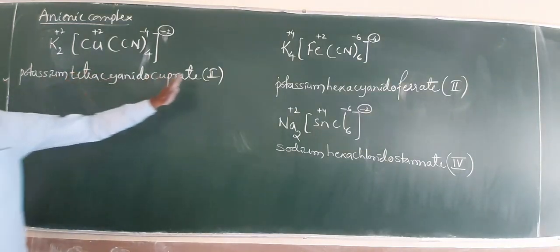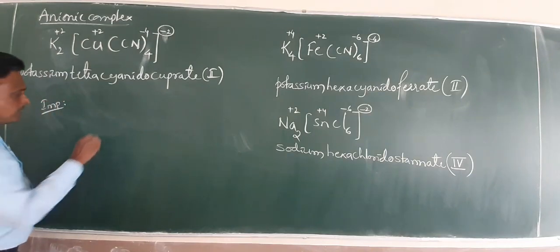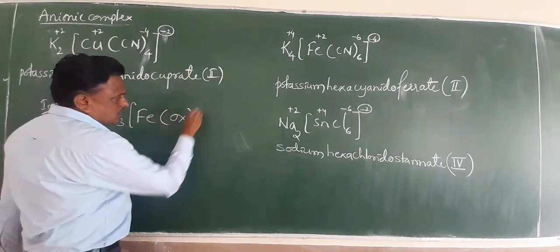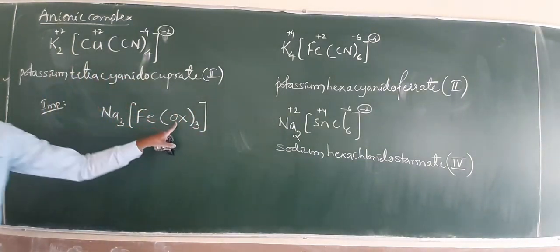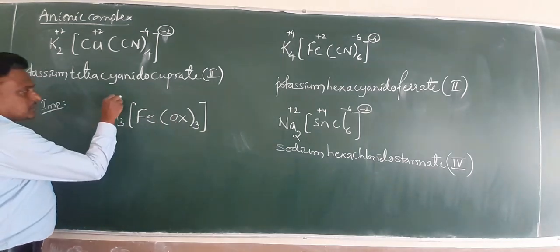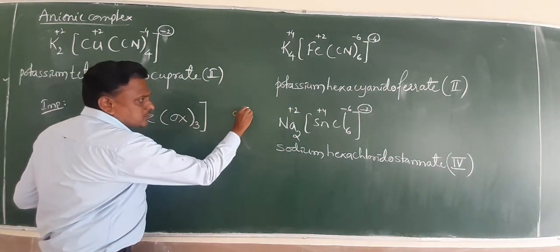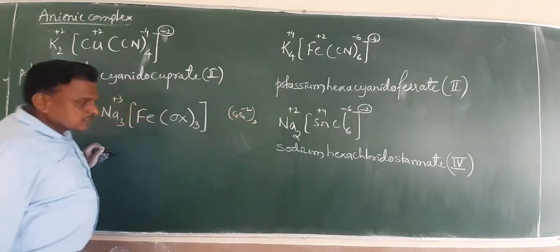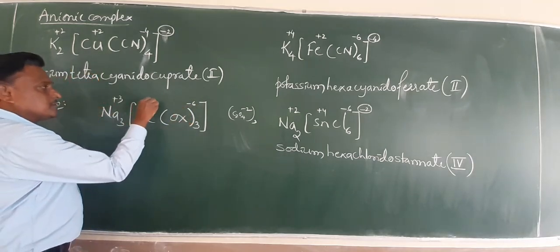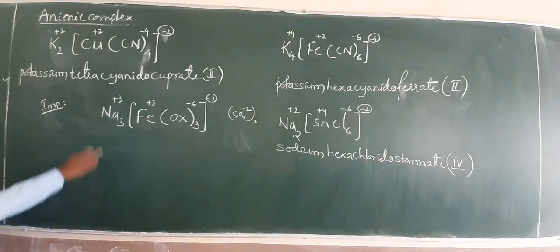Cu converted into cuprate. Oxidation state is 2. Example we have anionic. Wonderful example. This is Na3 Fe oxalato. Oxalato is a bidentate. This is plus 3.